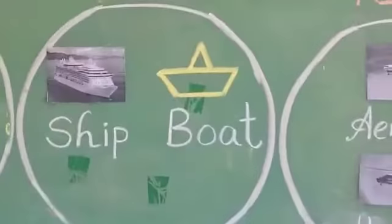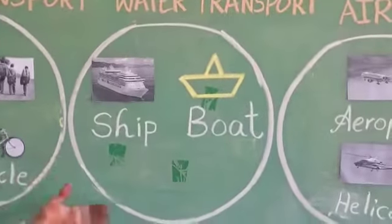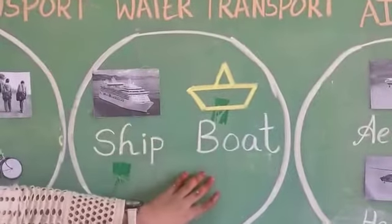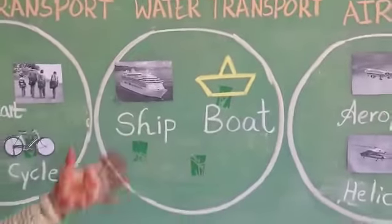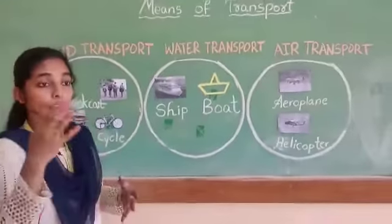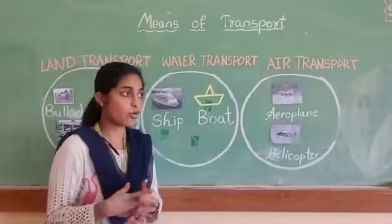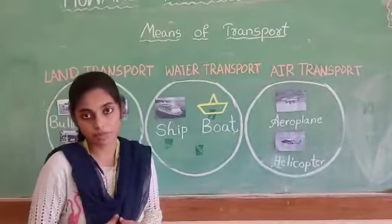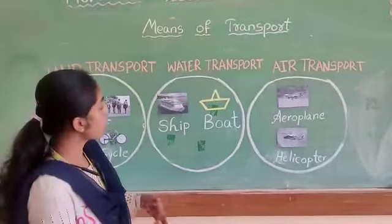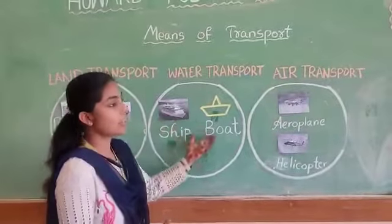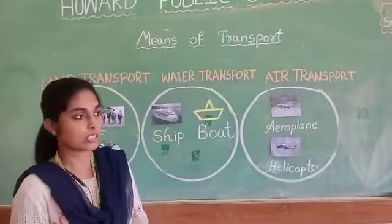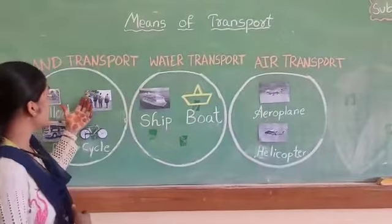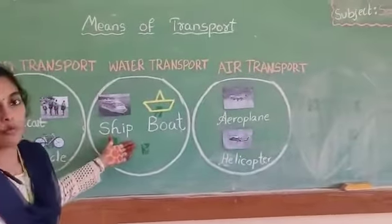Coming to water transport — what is water transport? It refers to vehicles which move in water. For example, ships and boats. You will see ships and boats in port areas. For example, if you go to Visakhapatnam, there you will find a beach and different types of ships. People use ships and boats to travel from one place to another. This is the second means of transportation — water transport.